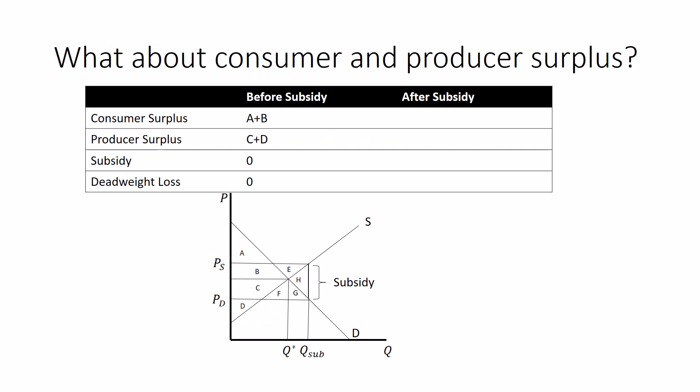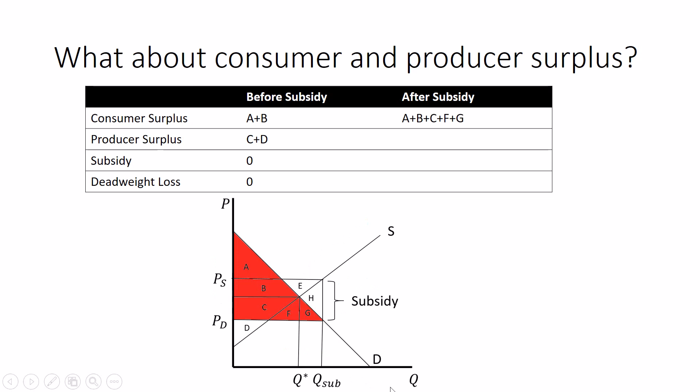What's consumer surplus after the subsidy? Well, there's this low demand price and a high quantity with it. The consumer surplus after the subsidy is A and B and C and F and G. Because consumers are paying a lower price and buying a higher quantity of the good. So, they gain C, F, and G.